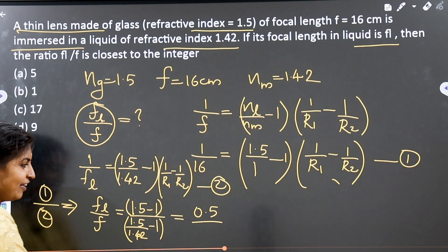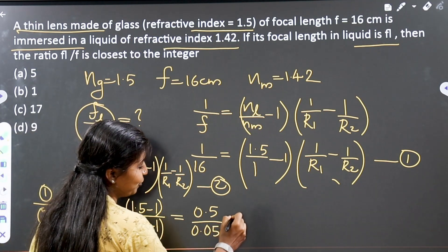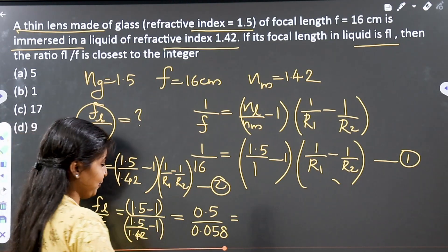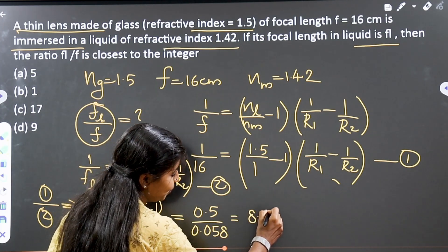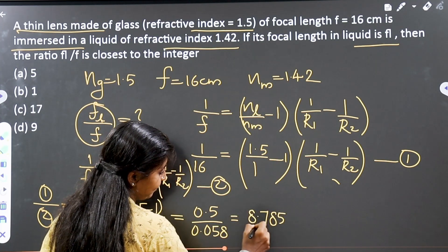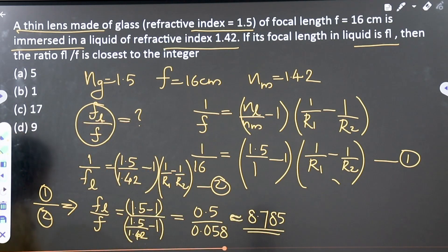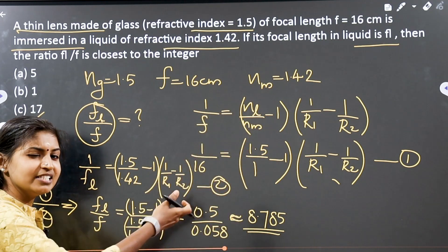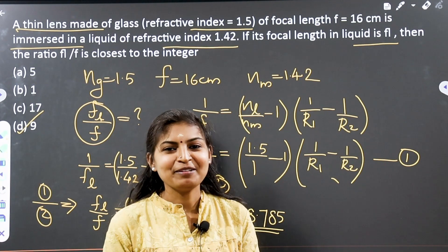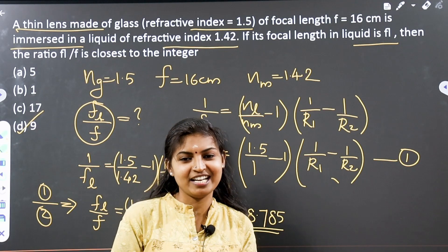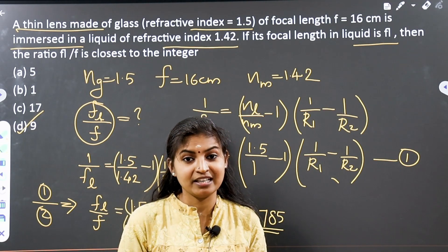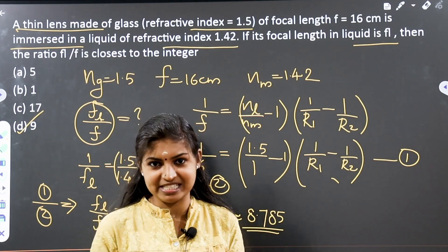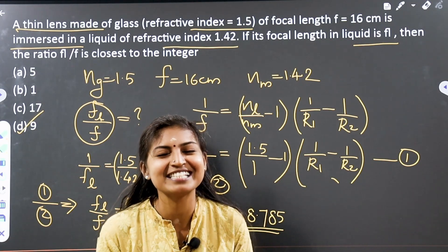You can do the calculation. The numerator works out to approximately 0.5 and denominator to 0.058, giving F_L/F approximately equal to 8.785. So this is the F_L by F ratio — approximately 8.785. You can check the options to get the answer using the lens makers formula. In this video we have discussed two JEE 2020 questions. It's me, Kavita, signing off.